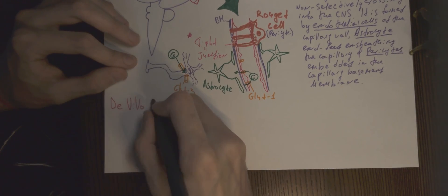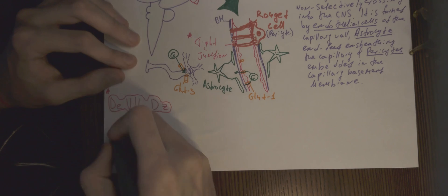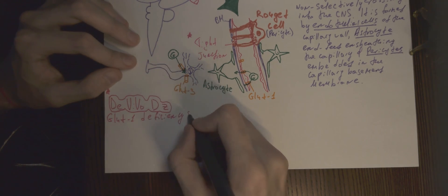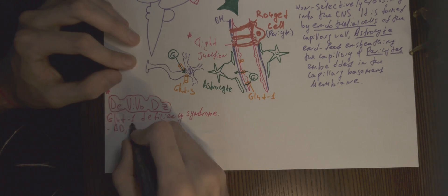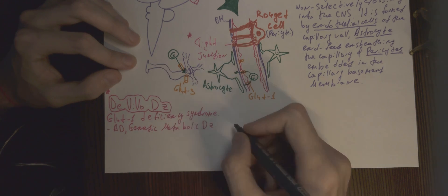DeVivo disease, also known as GLUT1 deficiency syndrome, is an autosomal dominant genetic metabolic disorder associated with GLUT1 deficiency.